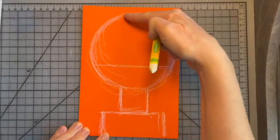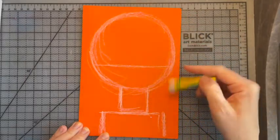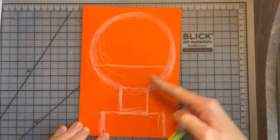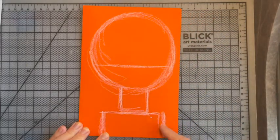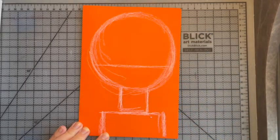All right, so notice the shapes we have: an almost perfect circle, a square, and a rectangle at the base for the head, neck, and shoulders.